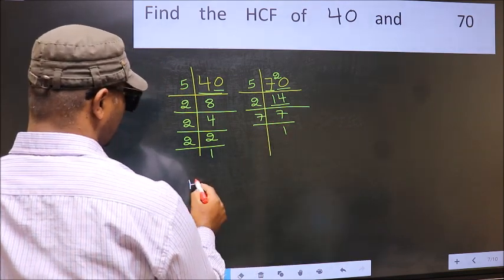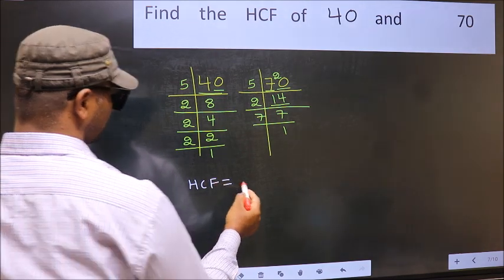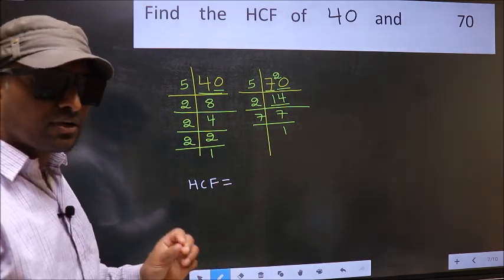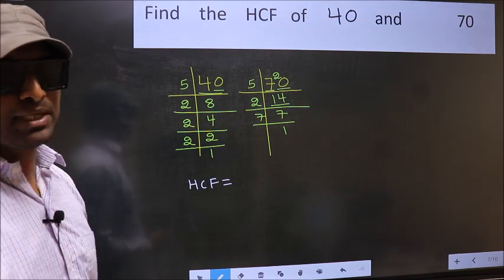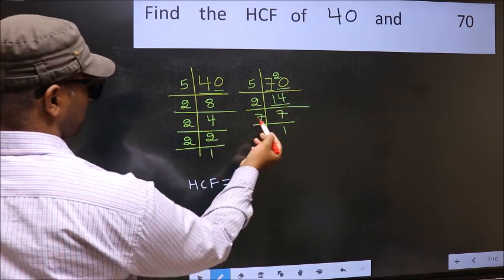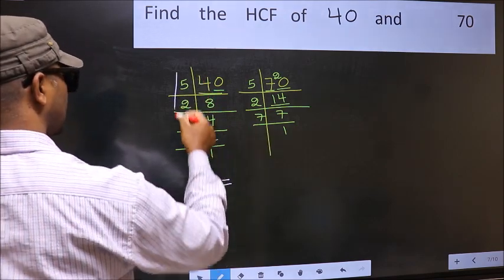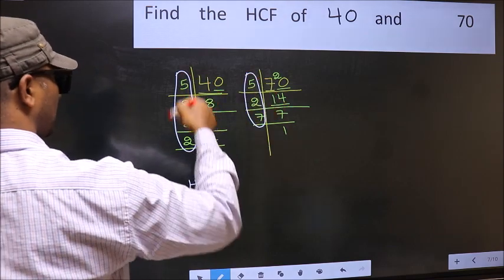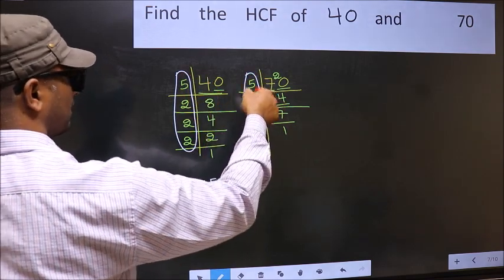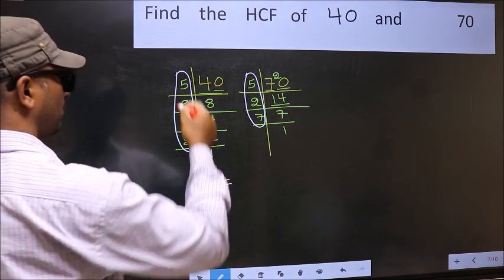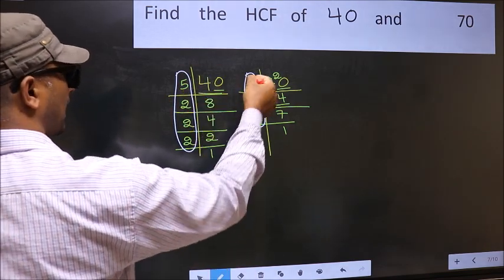Therefore our HCF is, HCF is the product of the numbers which should be present in these two places, i.e. here and also here, here and here.